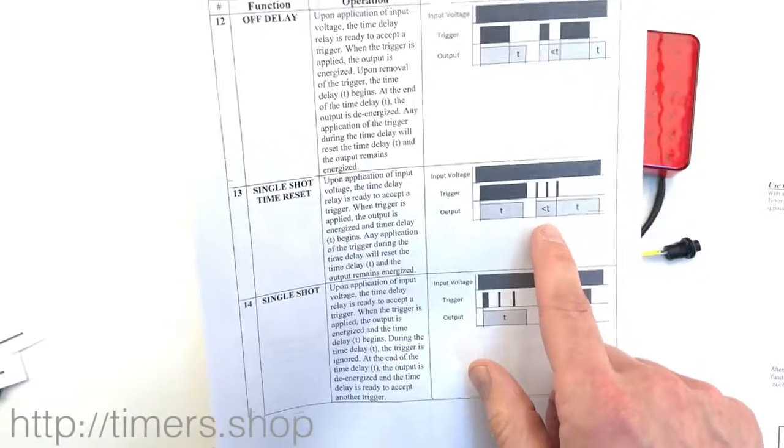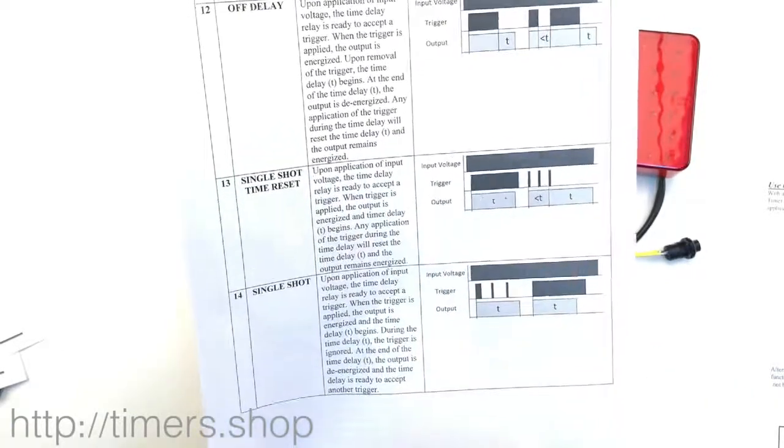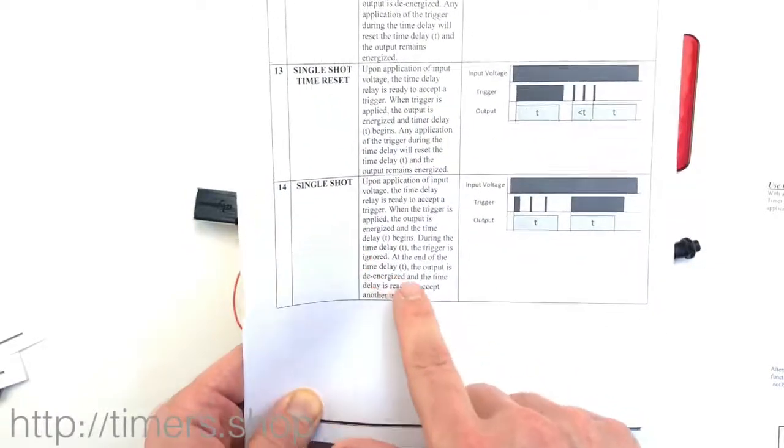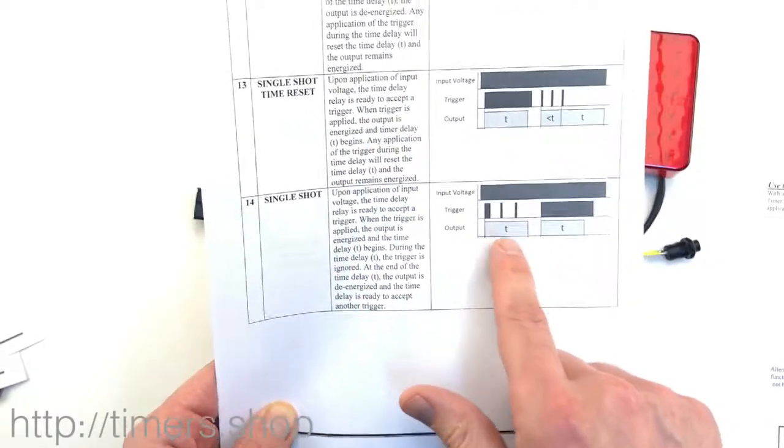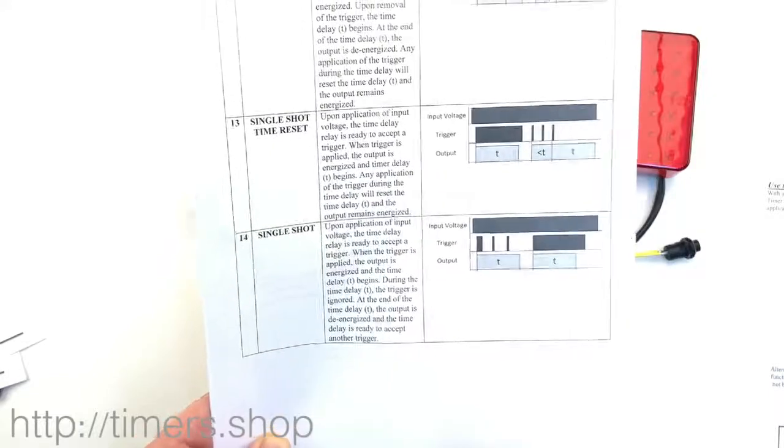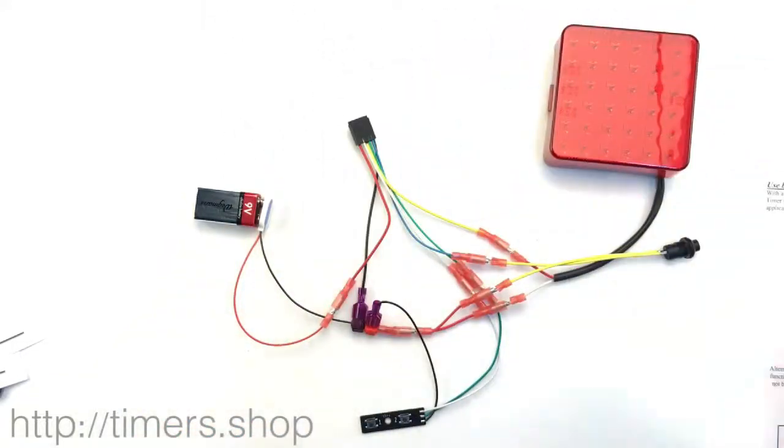So it will count down from the last button push, or we can do a single shot function 14 where once you push the button, the countdown starts. So let's do 13 once, looks more interesting.